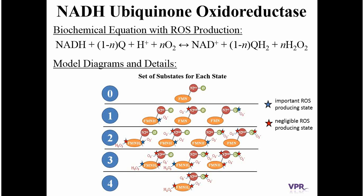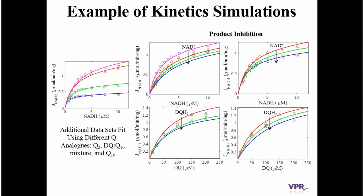Now that we have a model, the next step is to calibrate it — or fit it to data. An example of that is shown here: kinetic simulations of the model fitting experimental data, where we're looking at the NADH oxidation rate as a function of NADH, quinone, or other combinations of products and substrates. You'll notice that the model fits the data very well. This is just a small sample of the data used to calibrate the model — I encourage you to look at the paper if you want to see all of the data used to fit it.